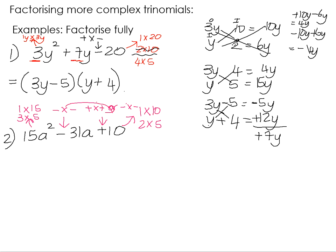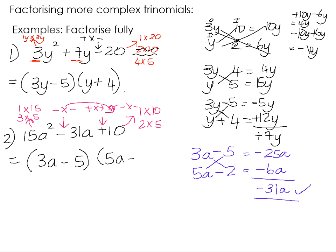If we now do our test, remember it's trial and error, but oftentimes it's useful to pick the factors that are often smaller. I'm going to test 3a and 5a and I'm going to test 5 and 2. I know that they both need to be minuses, so I can immediately fill that in. 3a times negative 2 is negative 6a. 5a times negative 5 is negative 25a. And negative 25 subtract 6 is negative 31a. That is my middle term, so I was quite fortunate there. I got the factors straight away. So 3a minus 5 times 5a minus 2 will give you the trinomial 15a squared minus 31a plus 10.